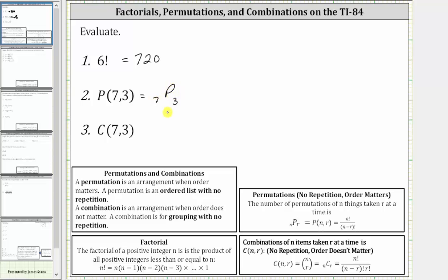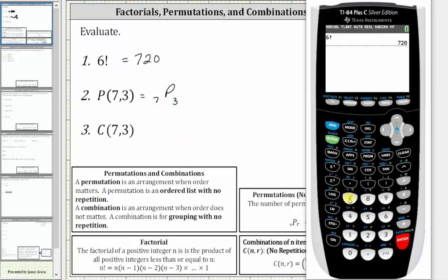Which is what the TI-84 uses. So going back to the home screen, we press seven, math, right arrow to probability. Because we have a permutation, we select option two by pressing two or arrowing down to two and pressing enter.